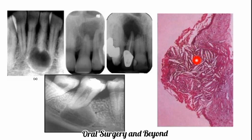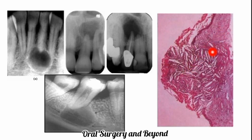On the histological slide, there is always a presence of epithelial lining and cholesterol clefts. These two findings are the key terms we look for on the histopathological slide to confirm a radicular cyst.